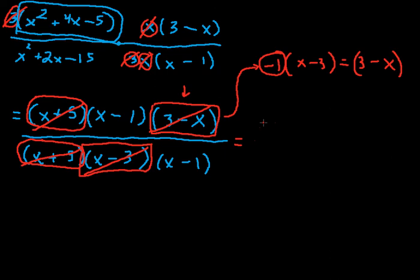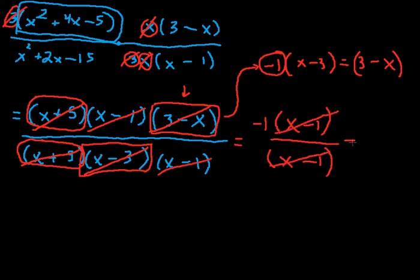So what I have here is now negative 1 times x minus 1 over x minus 1. But, check that out, the x minus 1 and the x minus 1 cancel. So the entire thing turns into negative 1. That is the answer.